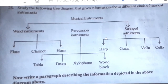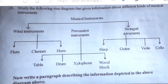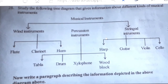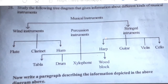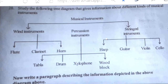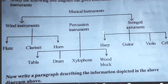Examples for wind instruments are given. They are flute, clarinet, and horn. Next, examples for percussion instruments are also given. They are tabla, drum, xylophone, and woodblock.